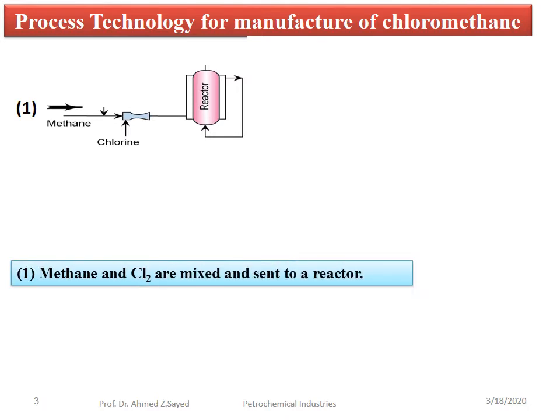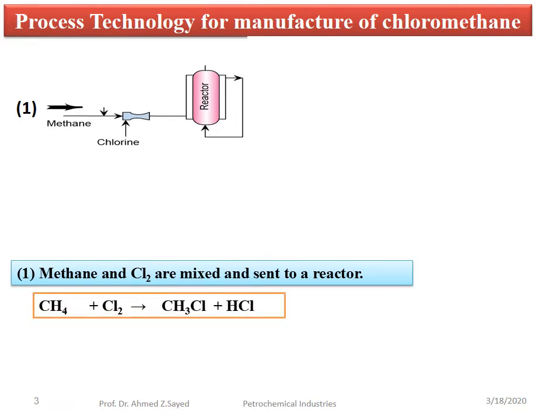Step 1: Methane and Cl2 are mixed and sent to a reactor. A series of reactions occur during this process. Methane plus chlorine gas gives methyl chloride and hydrochloric acid.